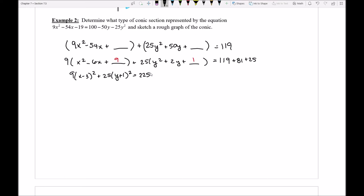Now if I was to go ahead and simplify this down, dividing everything by 225, I get x minus 3 squared over 25, I get y plus 1 squared over 9, and this is equal to 1.